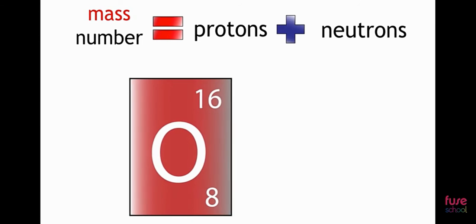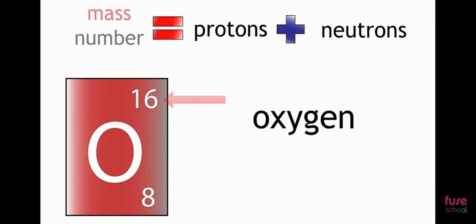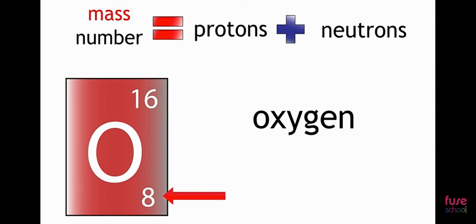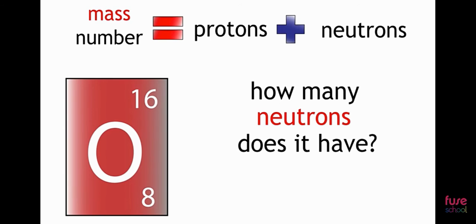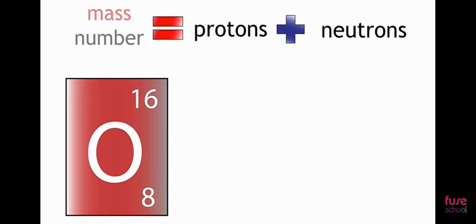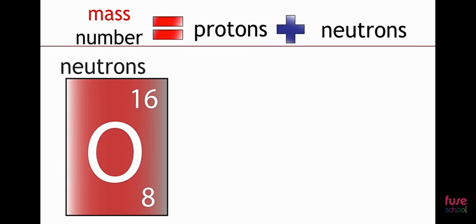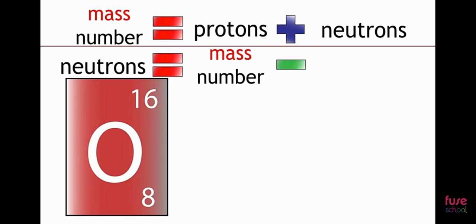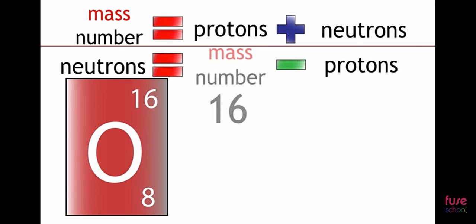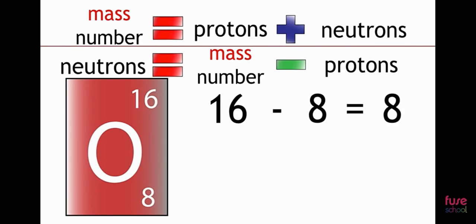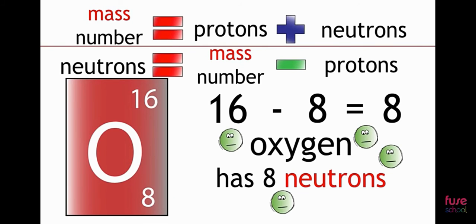So if we take oxygen — oxygen has a mass number of 16 and has 8 protons. But how many neutrons does it have? Remember, mass number equals protons plus neutrons. We can rearrange this to show that neutrons equals mass number minus protons. Neutrons equals 16 minus 8 equals 8. Oxygen therefore has 8 neutrons.